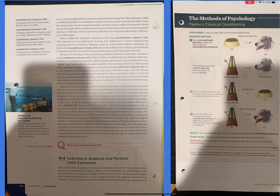Because the clicking of the metronome produces salivation only after training, it is the conditioned stimulus. That is, before conditioning, the clicking of the metronome is unrelated to salivation. After learning takes place, the clicking serves as a signal that food is about to become available. The increased salivation that occurs when only the conditioned stimulus is presented is the conditioned response. It is the response that has been learned. In the case of Pavlov's dogs, both the conditioned response and the unconditioned response were salivation. However, the conditioned response and the unconditioned response are not always identical. The conditioned response usually is weaker than the unconditioned response. Thus, the metronome sound produces less saliva than the food does.